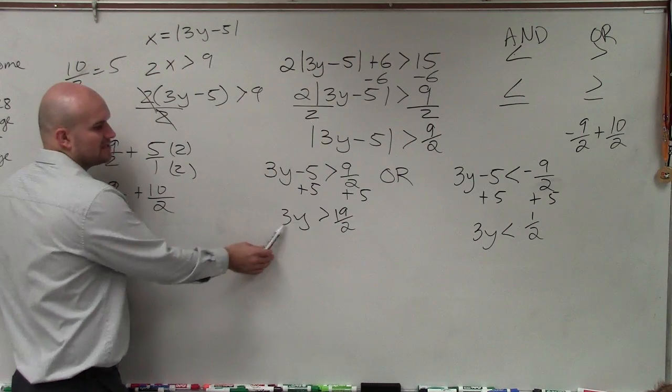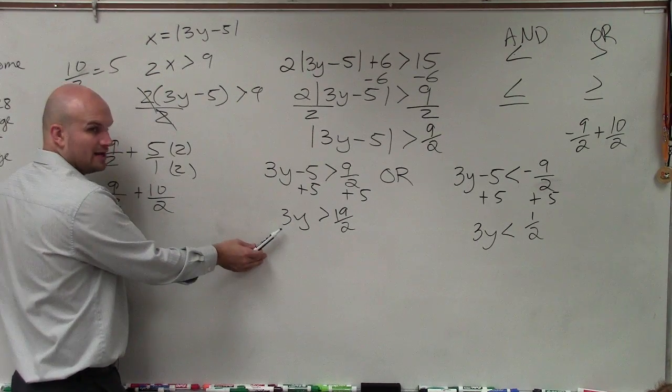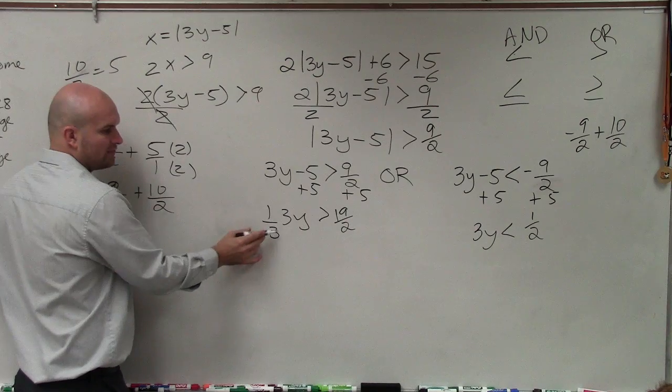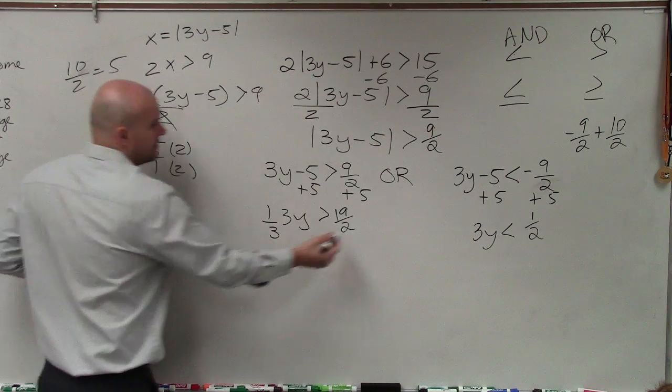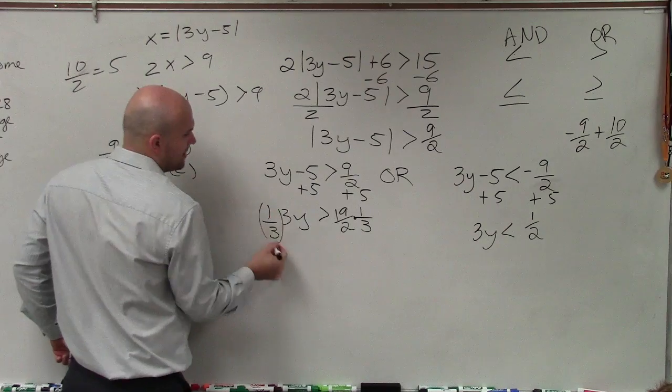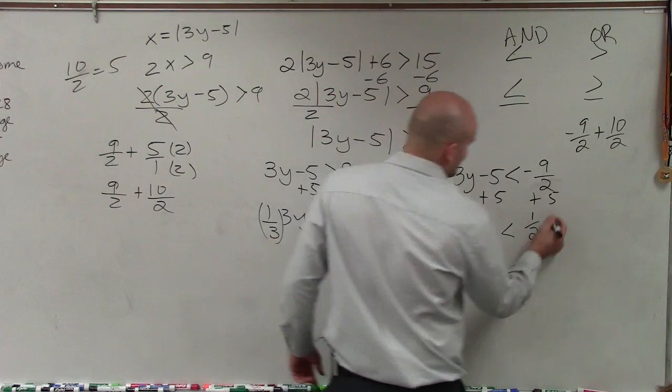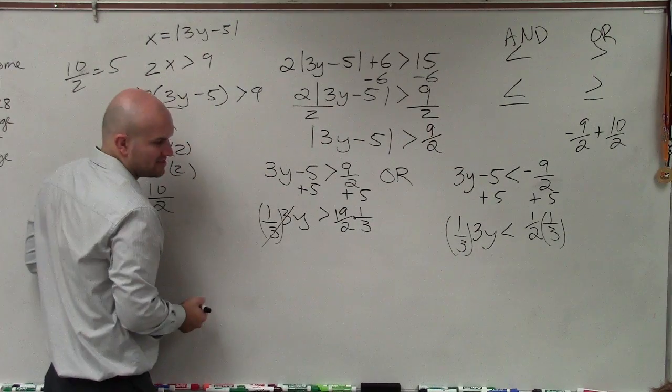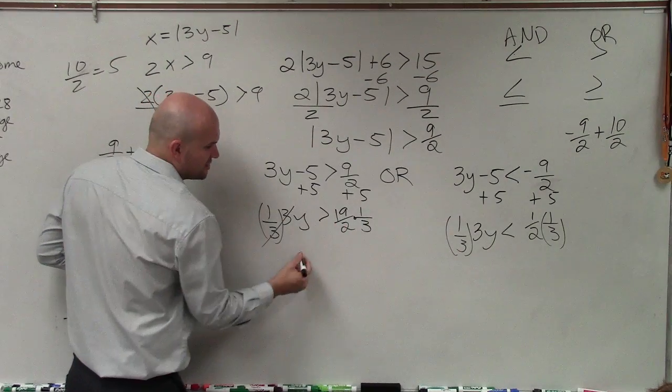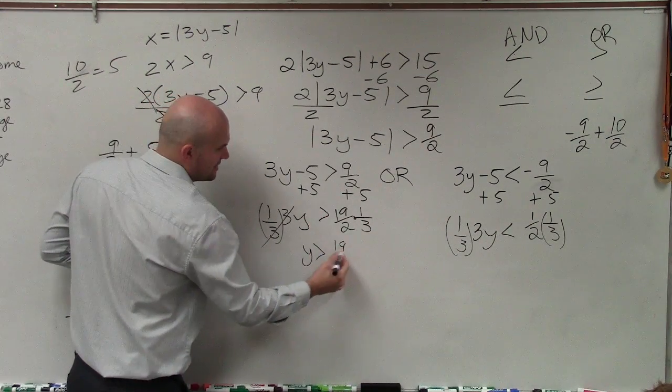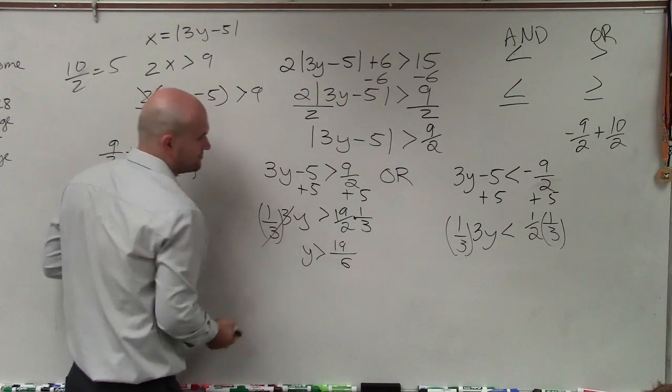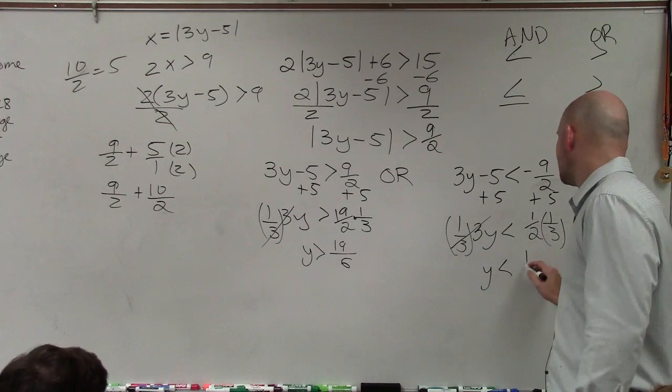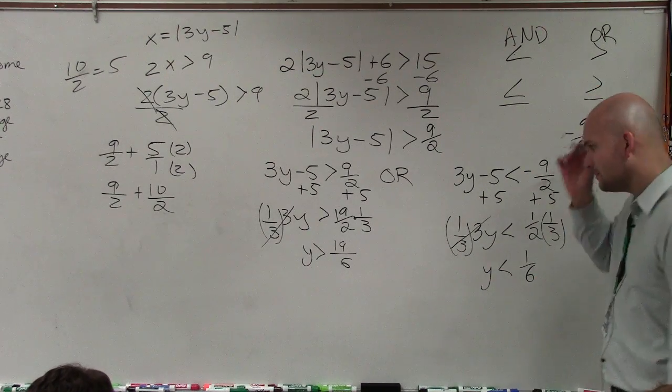Now, ladies and gentlemen, usually what we do is divide by 3, right? Divide by 3 to solve. We could also multiply by the reciprocal. Is multiplying by 1 over 3 the same thing as dividing by 3? Yeah. But since I have a fraction, I'm going to decide to multiply by the reciprocal. It's the same operation, but to me, it's going to make a little bit more sense. So any number multiplied by the reciprocal is 1. And the reason why is because when you multiply fractions, you just multiply across. 19 times 1 is 19. 2 times 3 is 6. Over here, y is less than 1 sixth.